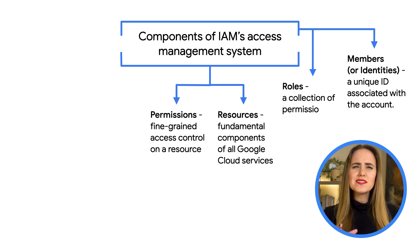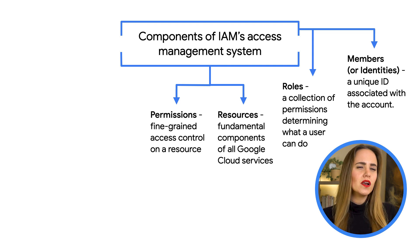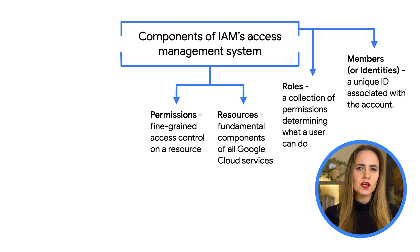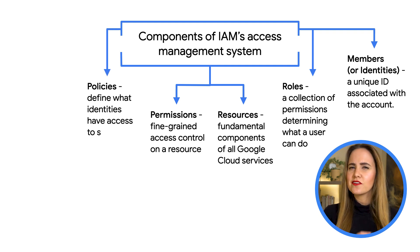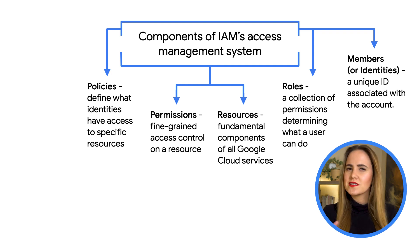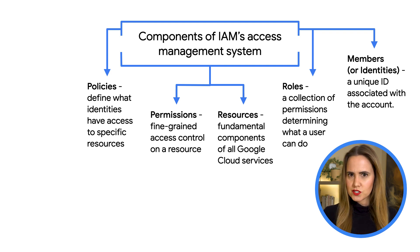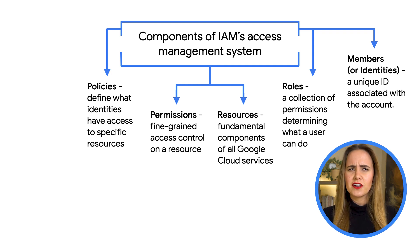A role is a collection of permissions, and permissions determine what operations are allowed on a resource. When you grant a role to a member, you grant them all the permissions the role contains. Google Cloud has predefined built-in roles, and you can also create custom roles. Policies bind a set of Cloud IAM members to a role. If you want to define who has what type of access on a resource, you create a policy and attach it to that resource. The policy also has other information such as auditing configuration.